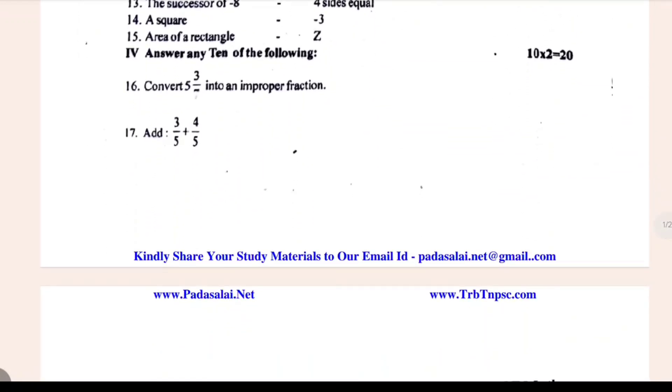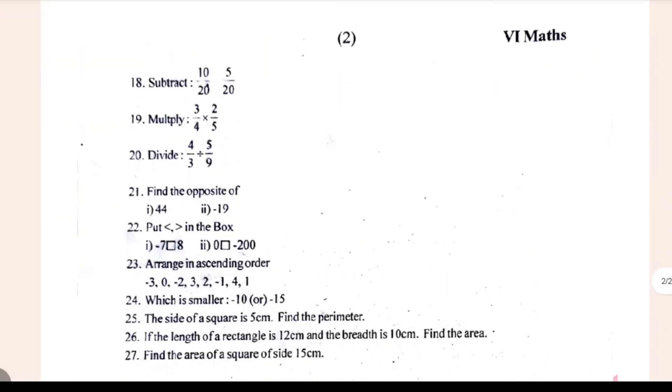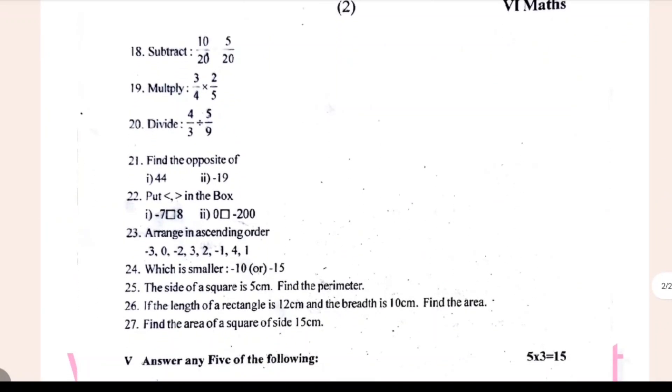Convert 5 divided by 3 divided by 7 into an improper fraction. Add 3 divided by 5 plus 4 divided by 5. Subtract.